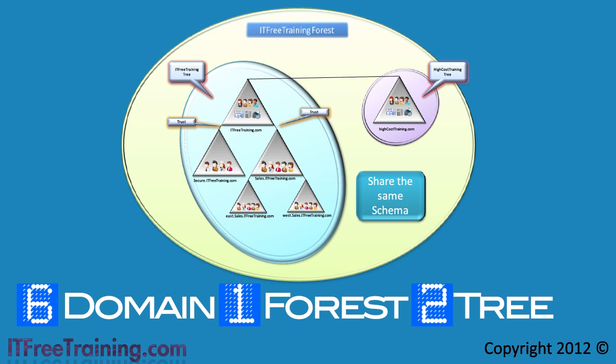The advantage of having a forest is that all domains in the forest also have trust relationships generated automatically. As shown here, a user in high cost training could access a resource in east.itfreetraining.com. The trust relationship is automatically created between parent and child domains and between trees in the forest. Assuming the user in high cost training has access, they can access any resource in any domain in the forest.